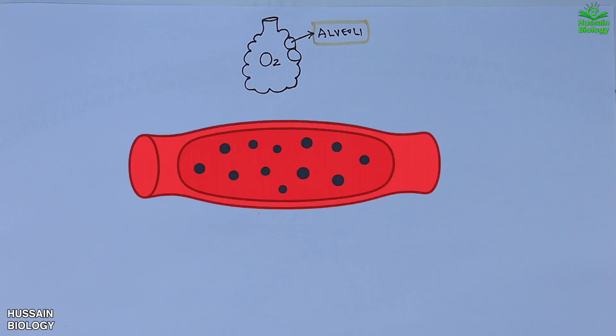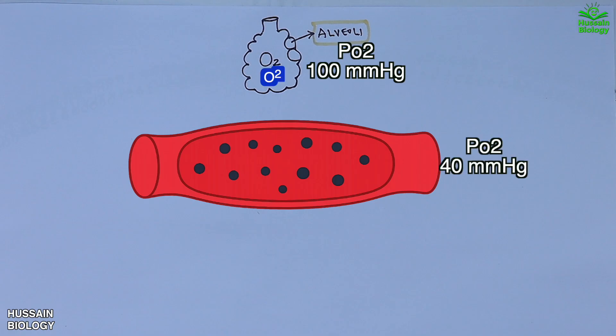In the alveolus, the partial pressure of oxygen (PO2) is around 100 mmHg, whereas in the incoming venous blood the PO2 is only about 40 mmHg. So we have an oxygen gradient of about 60 mmHg, and oxygen naturally moves from the alveolus into the blood. This process follows Fick's law of diffusion.